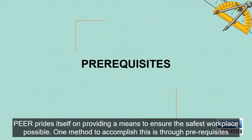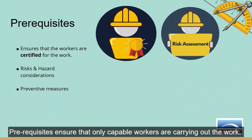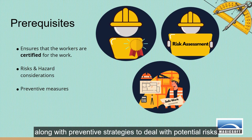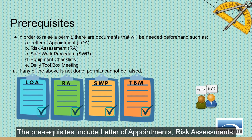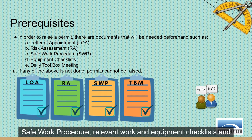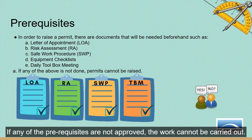Peer prides itself on providing a means to ensure the safest workplace possible. One method to accomplish this is through prerequisites. Prerequisites ensure that only capable workers are carrying out the work, potential risks and hazards are considered, along with preventive strategies to deal with potential risks. The prerequisites include letter of appointments, risk assessments, safe work procedure, relevant work and equipment checklists, and daily toolbox meetings checklist. If any of the prerequisites are not approved, the work cannot be carried out.